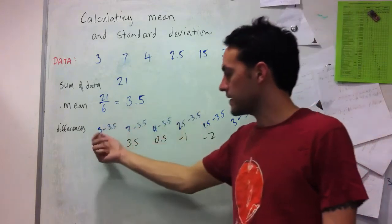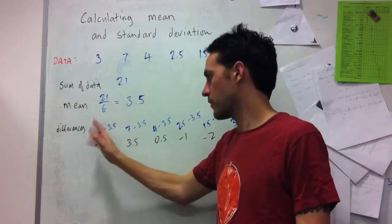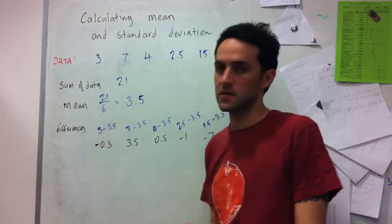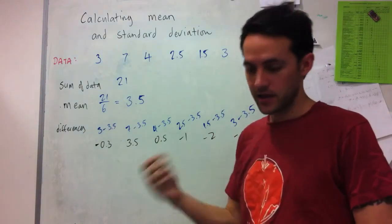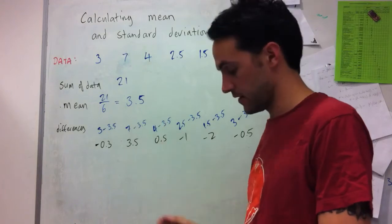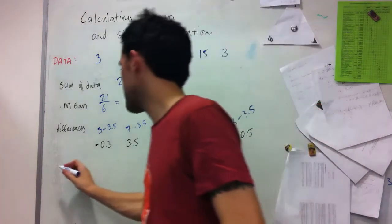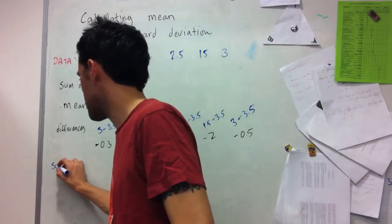It doesn't matter. You can work out the differences the other way around, having the mean minus the observation, or we can actually not worry about the negative values or the negatives here, because the next thing we do is take the square of these.